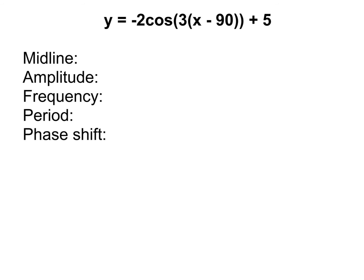So first up, the midline. That's got to be the number that's added or subtracted on the end here. So, our midline is going to be y equals 5. The amplitude, remember, is whatever number is multiplied out front, but always positive. So, our amplitude here is 2. And the frequency, that is whatever the number is multiplied inside. So, in this case, that's 3.